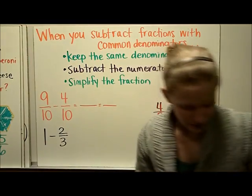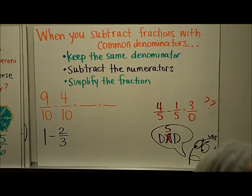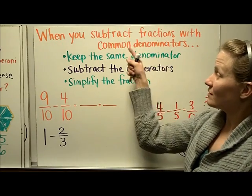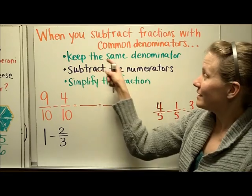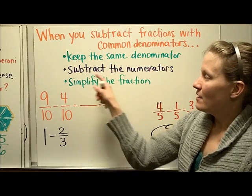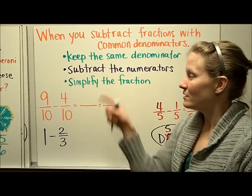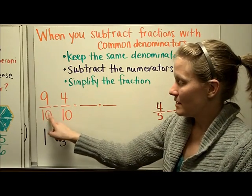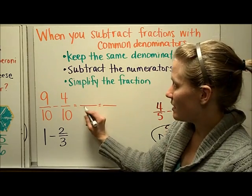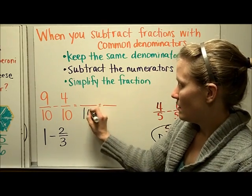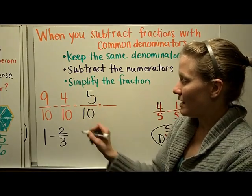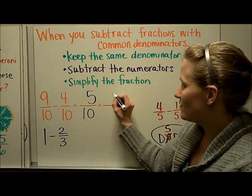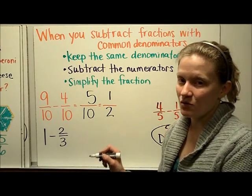So if we're not going to use models and we're just going to show the steps, you can follow these steps. When you subtract fractions with common denominators, just like adding, you want to keep the same denominator. Then you want to subtract the numerators and finally simplify your fraction. So let's do a couple examples. 9/10 minus 4/10, I'm going to keep the same denominator, which is 10. 9 minus 4 is 5, and immediately you should think, oh, 5 is half of 10, I can simplify that without even having to do any steps. 5/10 is equal to 1/2, so 9/10 minus 4/10 is 1/2.